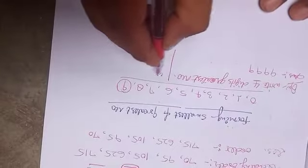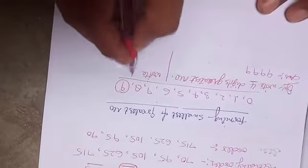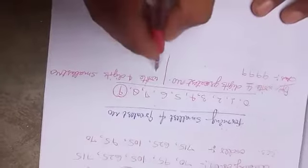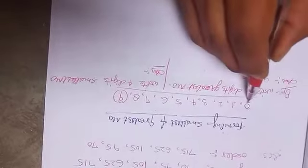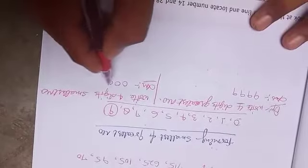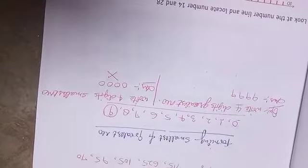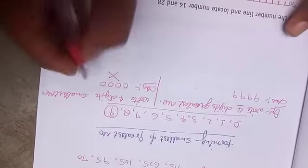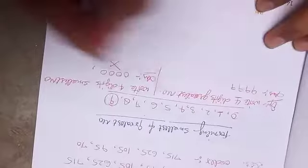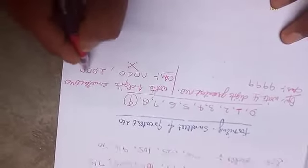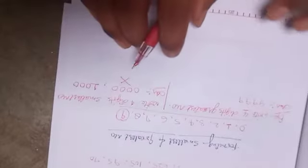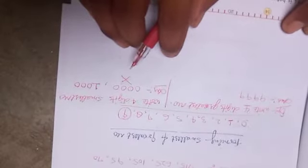And if you want to write the four-digit smallest number, zero is the least digit. If you write four zeros, that is not a number. So to write the smallest four-digit number, write one first, then put three zeros after it. So 1000 — one thousand — will be the smallest four-digit number.